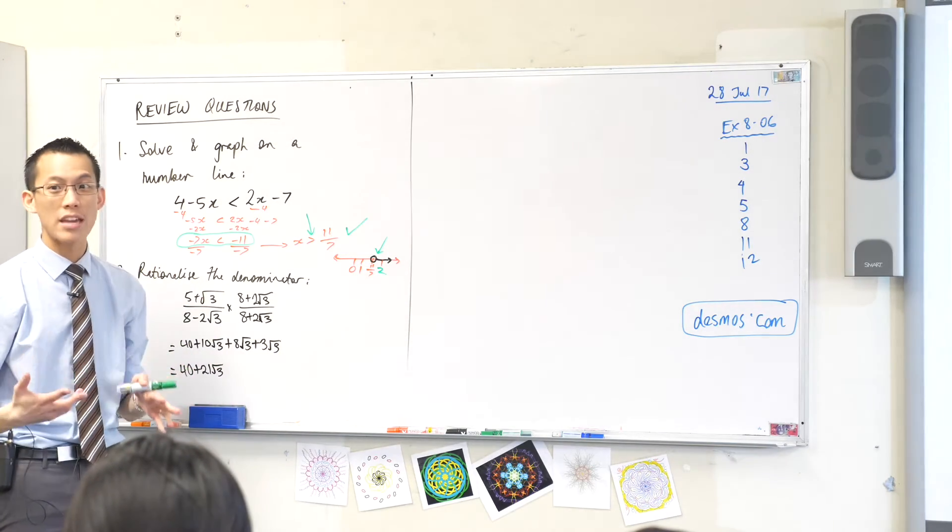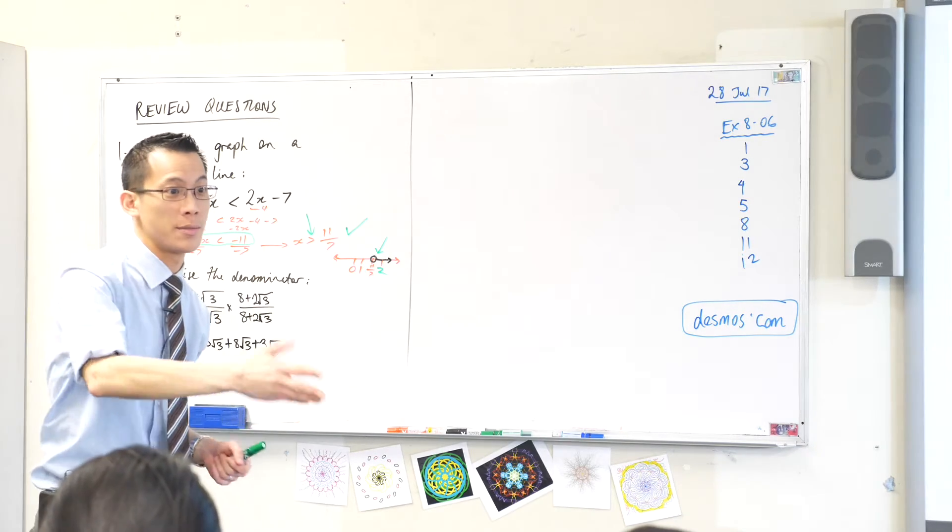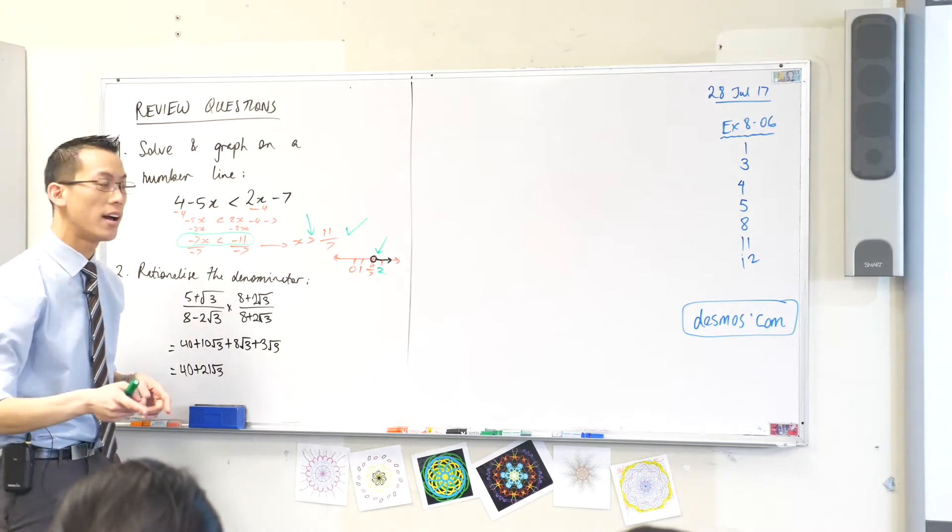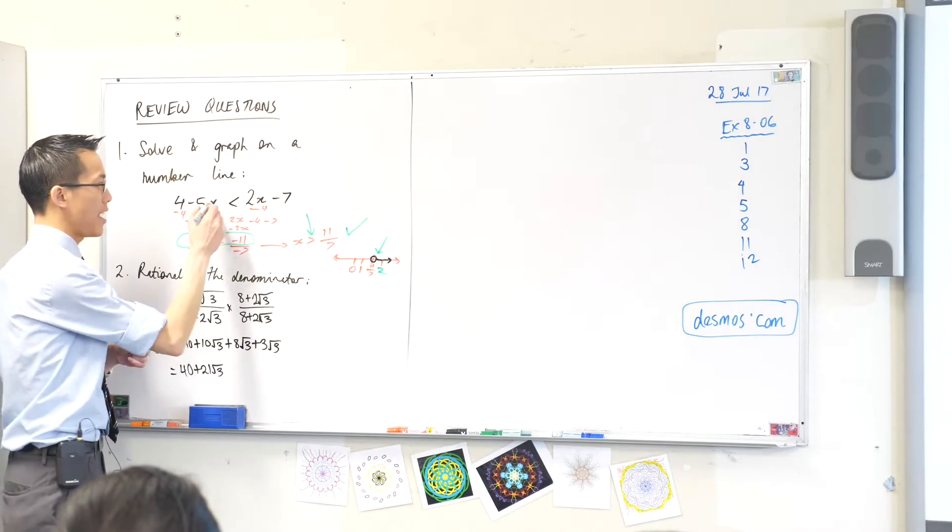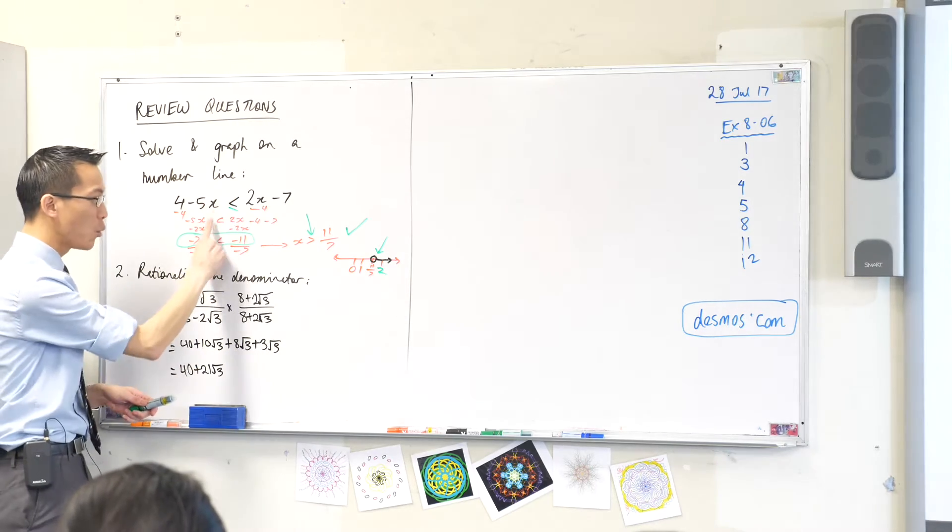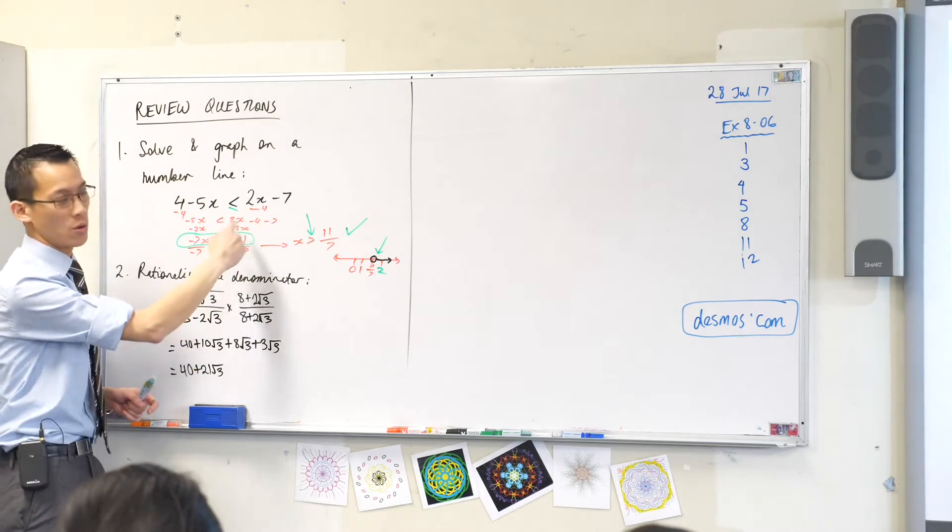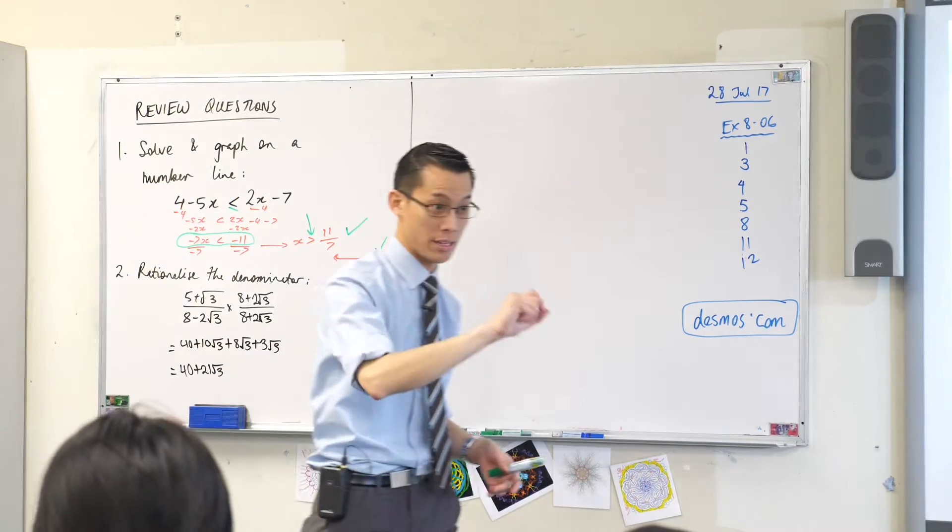If we were to change the question, how could I change the question so your answer would have to have a filled circle? What would I do, Isabel? Yeah, so if right at the beginning if it had been this, if it was less than or equal to, then all the way through it would be or equal to, in which case 11 on 7 would be included and we'd colour it in.